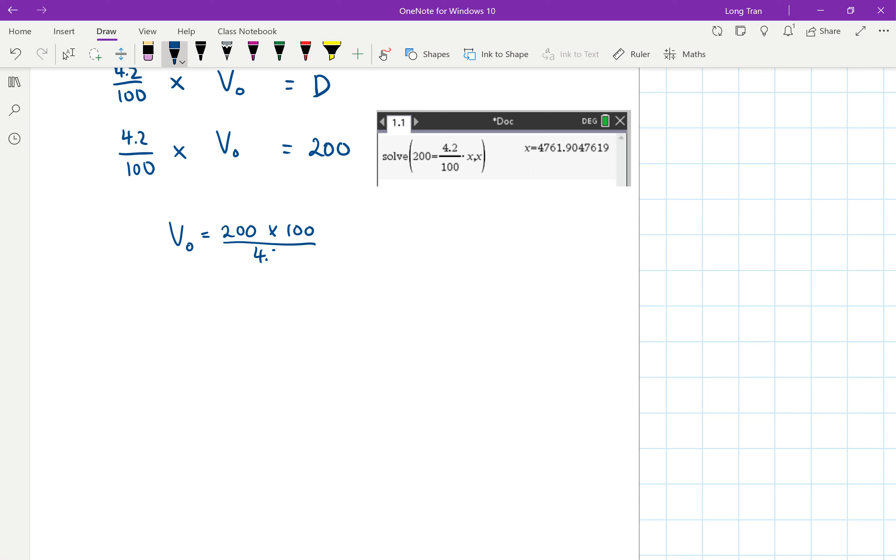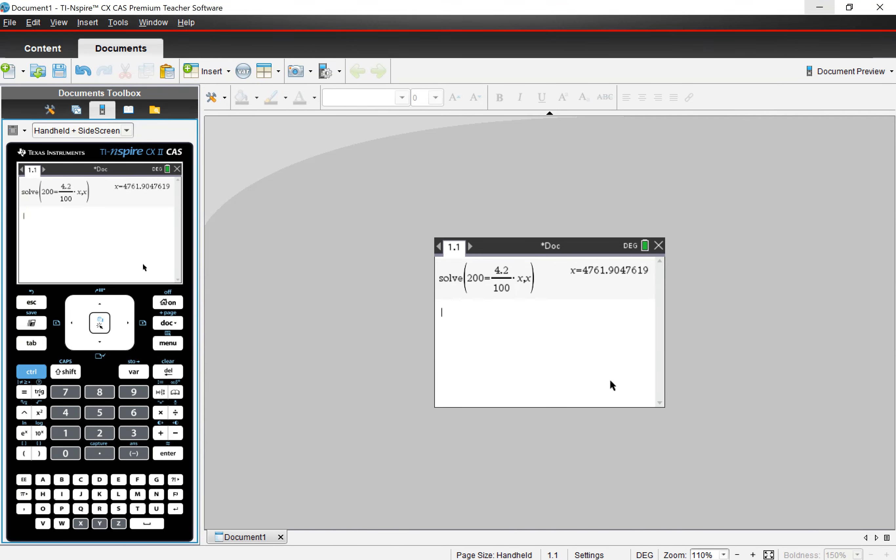And how I knew that was I just did the opposite. As you can see here, the opposite of divide 100, so I would have done times 100 on both sides. And then since that's 4.2 times V₀, I did divide it by 4.2. But if that's too confusing, ignore what I just said and just simply do it on your CAS over there. But you could have done 200 times 100 divided by 4.2 and you get the same answer as well. Both of which does the same thing.